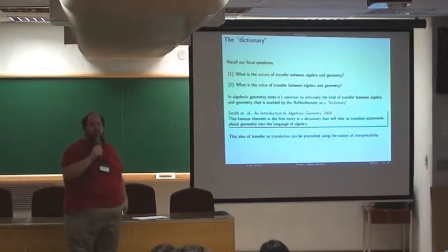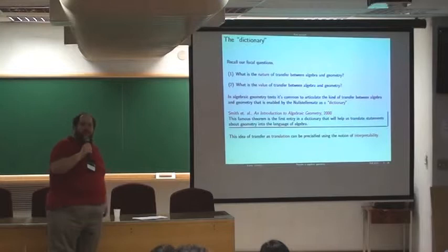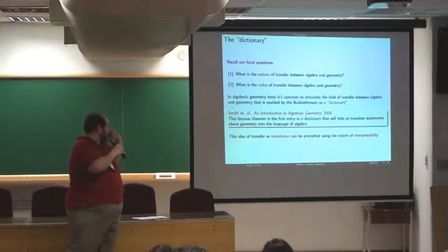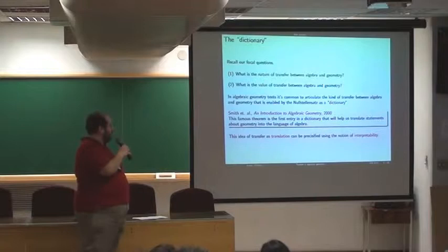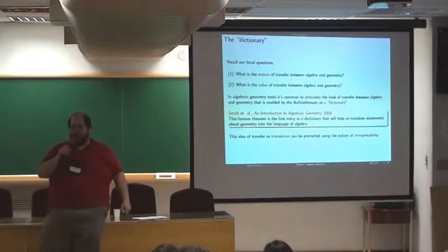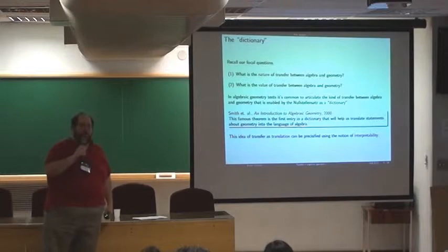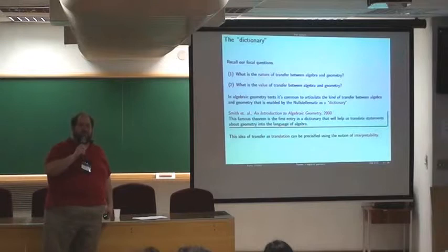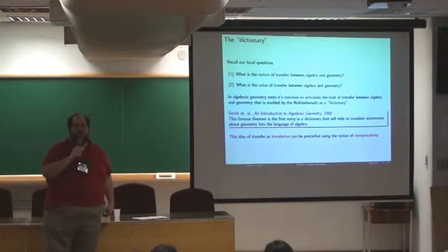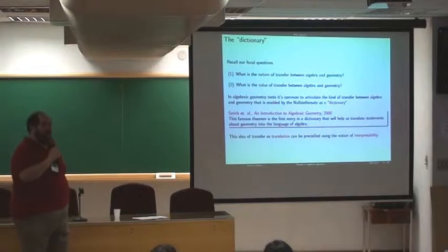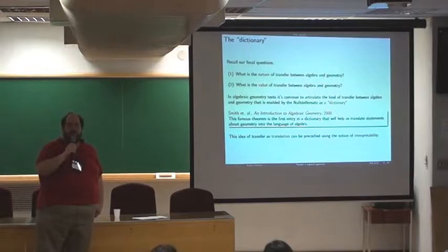So, now returning to the focal questions, the two questions were what is the nature of transfer and what is its value? So, I want to say that in algebraic geometry textbooks, it's very common to identify this transfer, the transfer of the Nullstellensatz, as being a dictionary. And for instance, again from Karen Smith's book, she says this famous theorem is the first entry in a dictionary that will help us translate statements about geometry into the language of algebra. This is not the only example. I could show you lots and lots of examples of this term dictionary. In fact, as a side historical question, I have been trying to figure out where the origin of this expression dictionary comes from. So far, I have a paper of Poincaré from 1882, I think, in the context of non-Euclidean geometry. But if anyone knows earlier usages in the literature of this expression dictionary between two areas of mathematics, I would be very interested in knowing that.